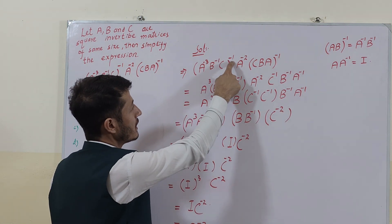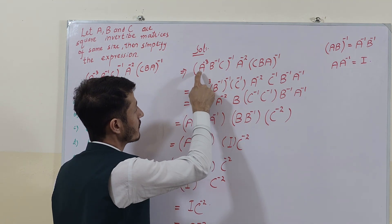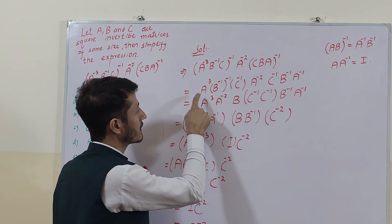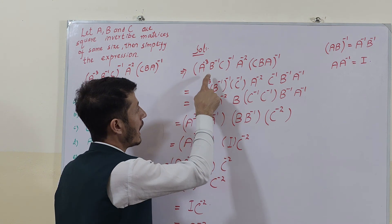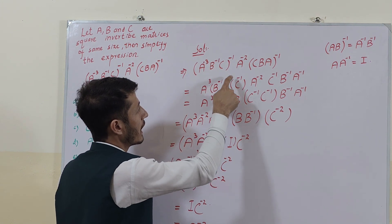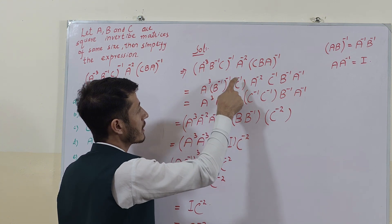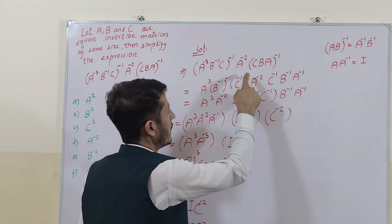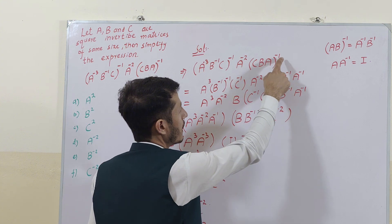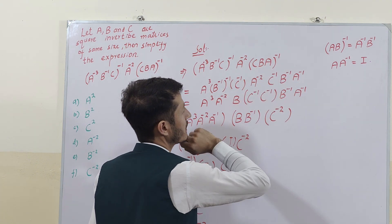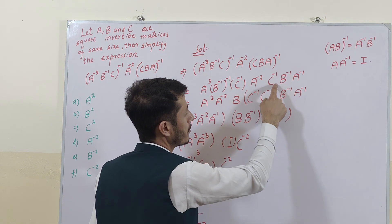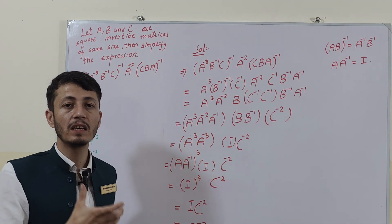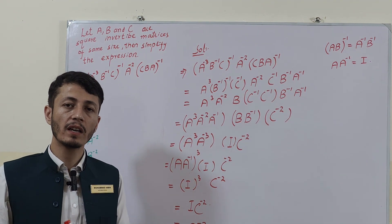If the inverse is applied upon the first parenthesis, it gives us A^(-3) whole power minus 1, which gives us A^3. Also B inverse whole inverse gives B, and C^(-1) inverse gives C. For the second parenthesis, applying the inverse gives us C^(-1), B^(-1), and A^(-1) in reverse order.